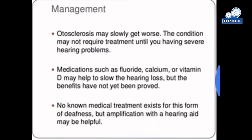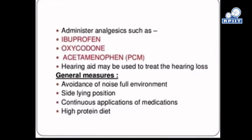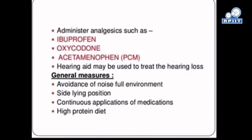Next is management of otosclerosis. Otosclerosis may slowly get worse, and the condition may not require treatment until you have severe hearing problems. Medications such as fluoride, calcium, or vitamin D may help slow hearing loss, but the benefits have not yet been proved. No non-medical treatment exists, but amplification with a hearing aid may be helpful. Some analgesic drugs for pain include ibuprofen, oxycodone, and paracetamol. General measures include avoidance of noisy environments, side-lying position, continuous application of medications, and a high-protein diet.